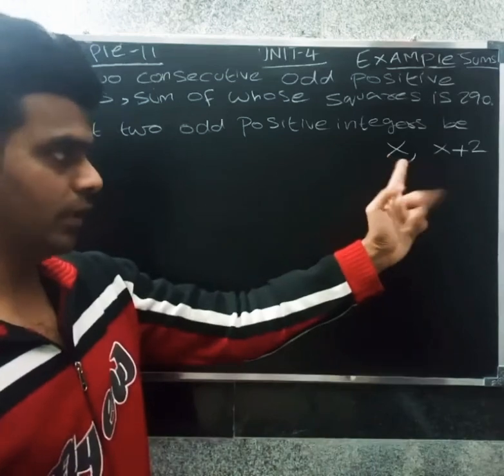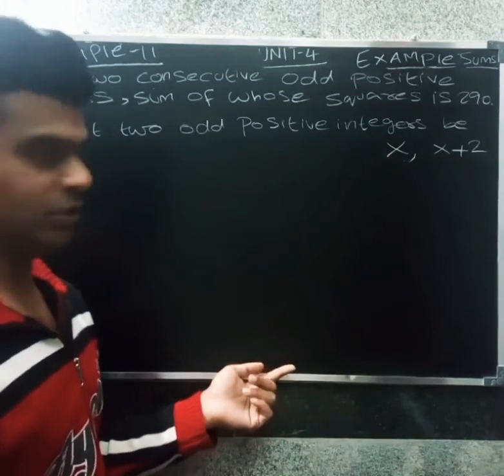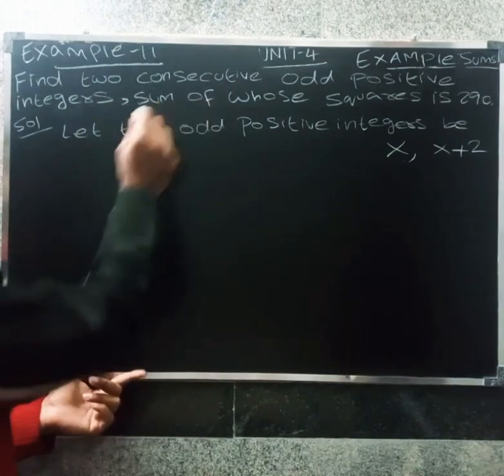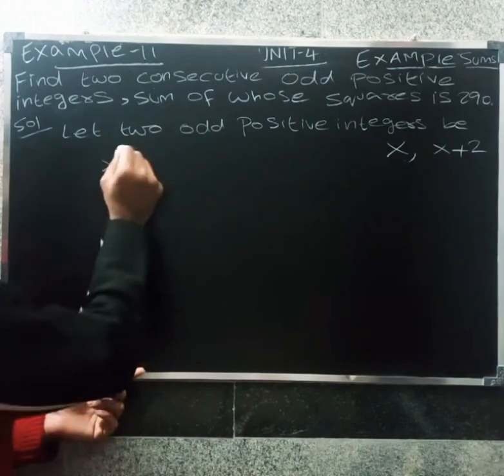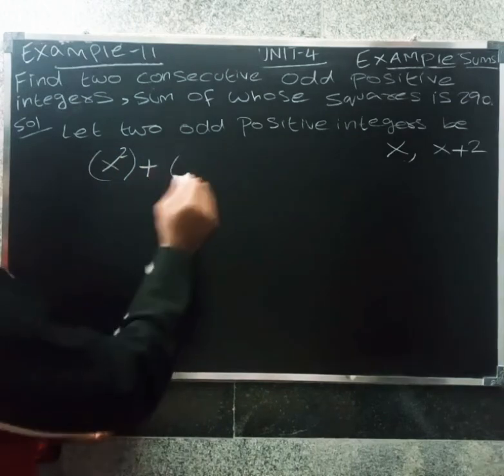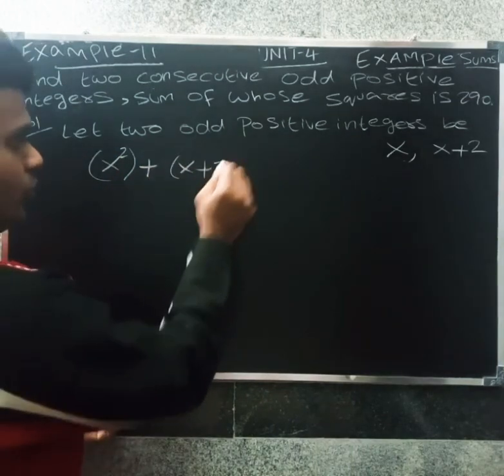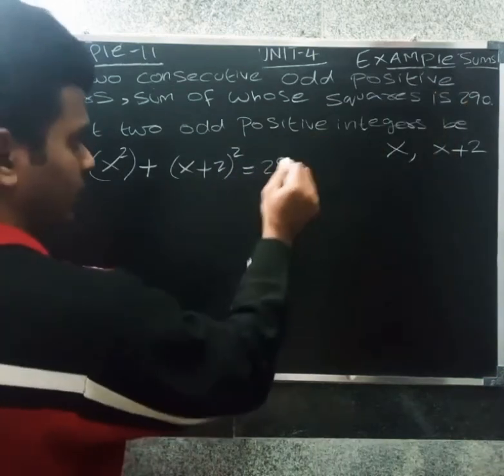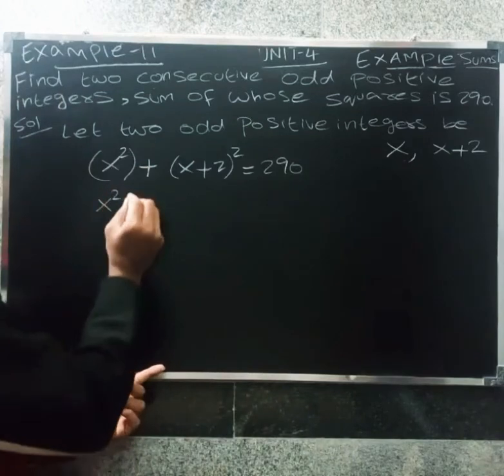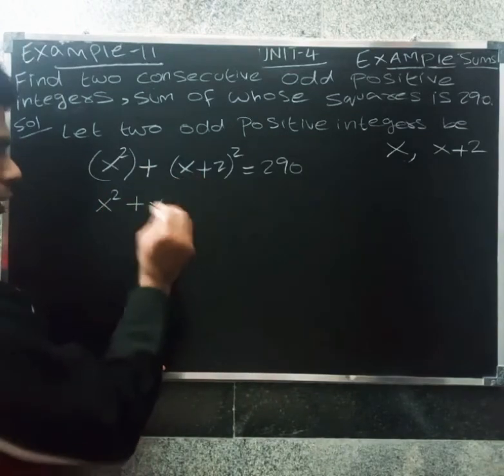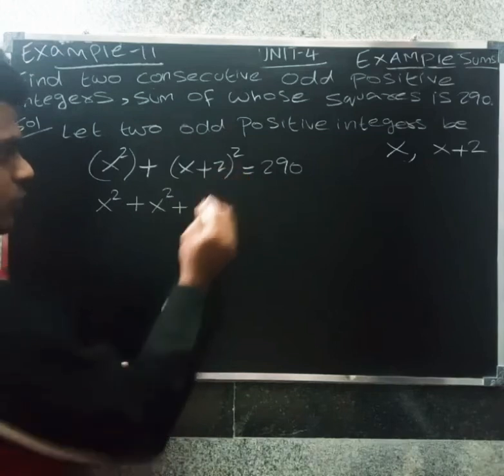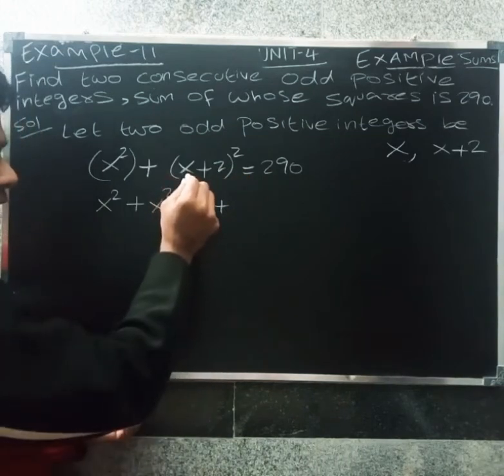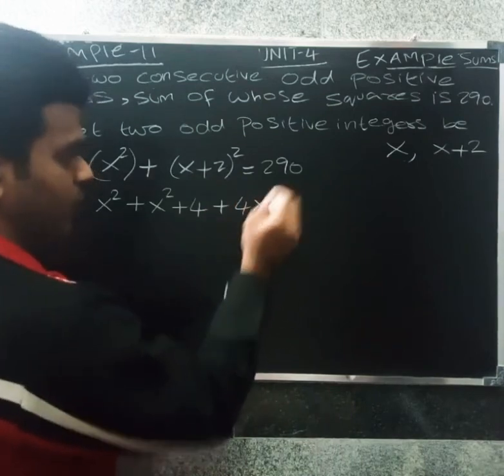So x and x plus 2 are consecutive odd positive integers. Sum of whose squares, so x square plus x plus 2 whole square equals 290. So x square plus, using a plus b whole square formula, a square plus 2ab plus b square, so x square plus 4 plus 4x.